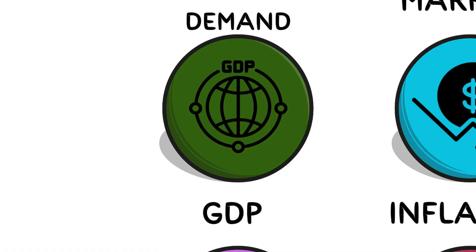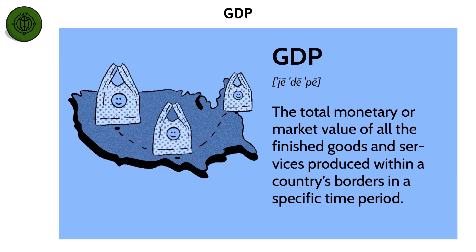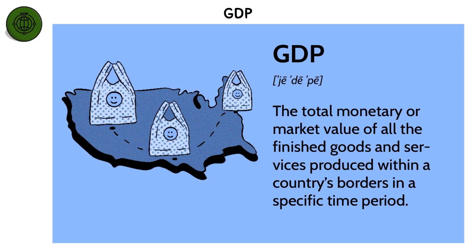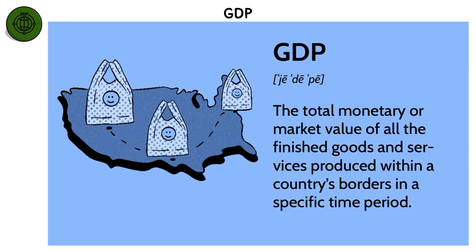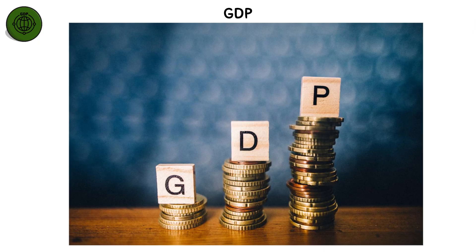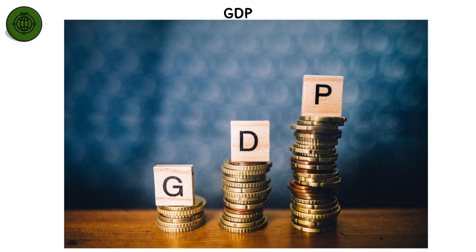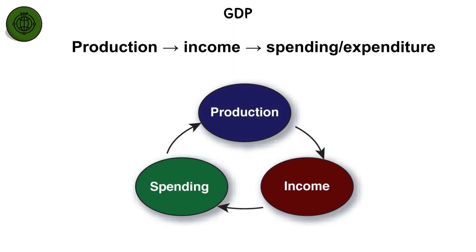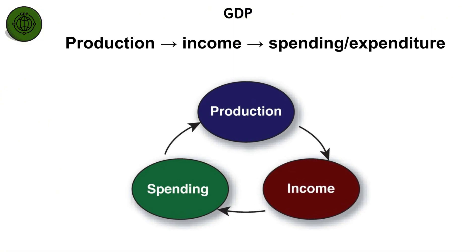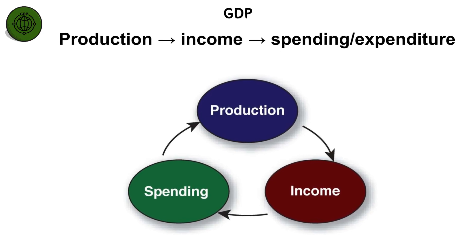Gross domestic product, or GDP, is the total value of all goods and services produced within a country's borders over a specific period, usually a year or a quarter. It serves as the primary indicator of an economy's size and overall health. Economists measure GDP in three main ways — production, income, and expenditure — which together provide a full picture of national economic activity.